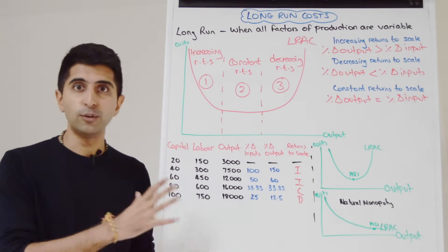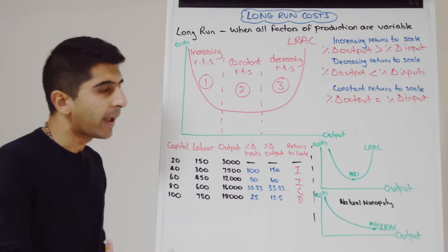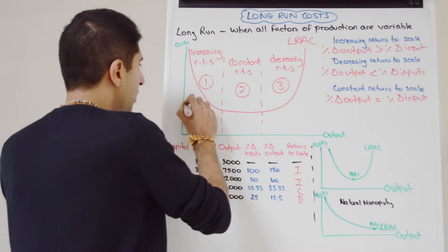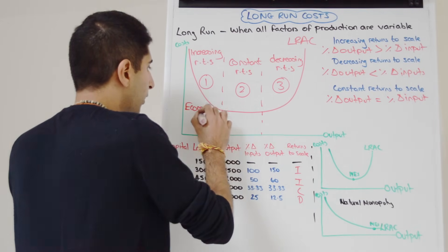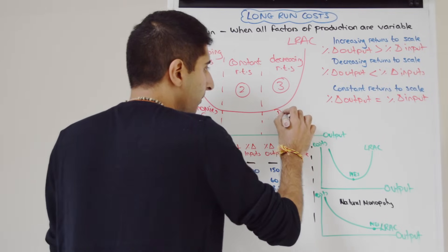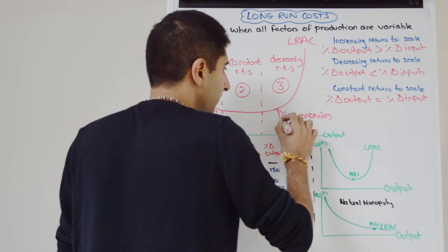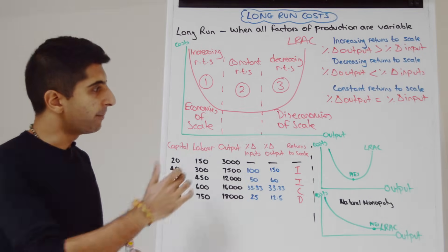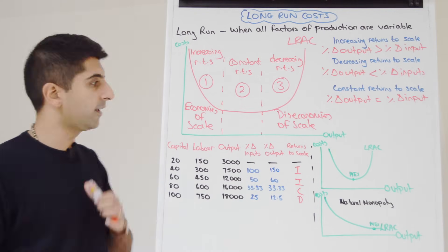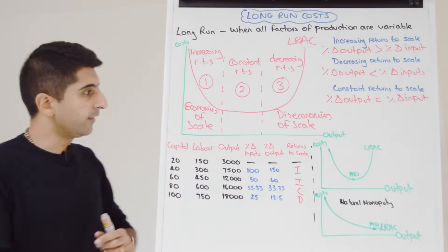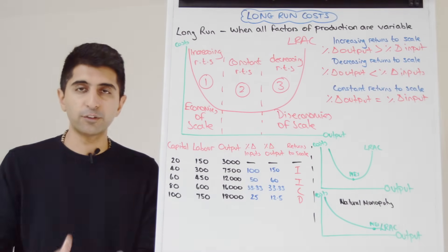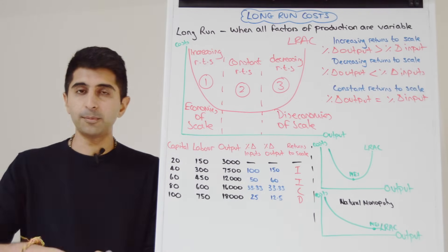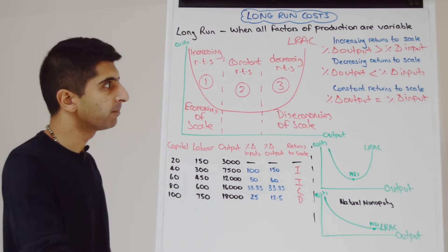Why can a business experience increasing returns to scale, or why can they suffer from decreasing returns to scale? It comes down to economies of scale or diseconomies of scale. They are separate but very much linked concepts. If a business experiences economies of scale they can experience increasing returns to scale, and vice versa for diseconomies. The next video will look at economies and diseconomies of scale in far more detail.